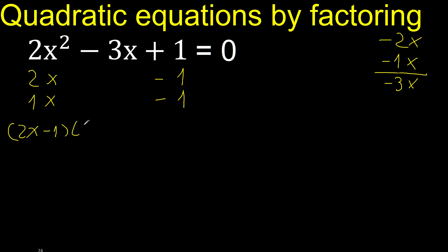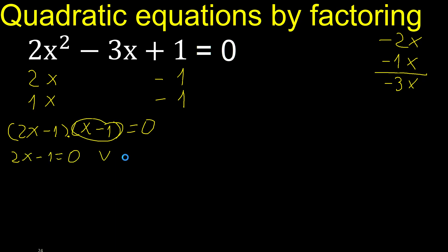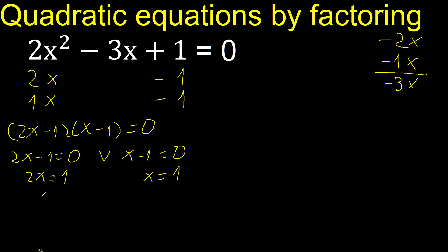1 multiplied by x is x minus 1, equal 0 — multiplication. Therefore this factor equal 0, or this factor equal 0. Minus 1 here, therefore change the sign: plus 1. Or change the sign: 2 here. Finish.